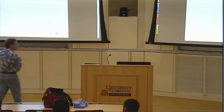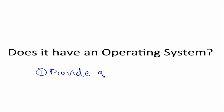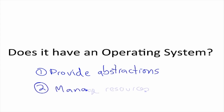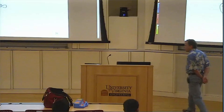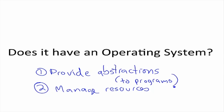So, can we actually decide by playing with the toy? Our two requirements are that it has to provide abstractions and it has to manage resources. Are there experiments you can do with the toys to figure out if they provide abstractions? If what we mean is providing abstractions to programs that run on the devices, there's no way you can really be certain doing external experiments on them.